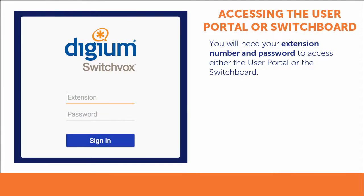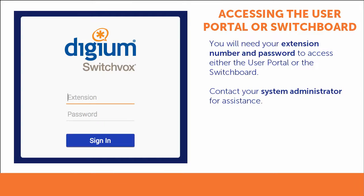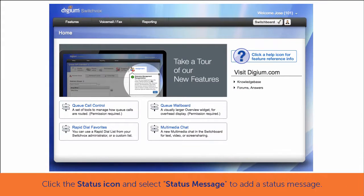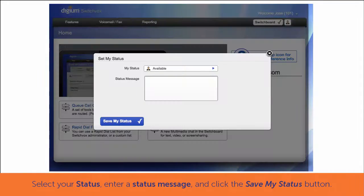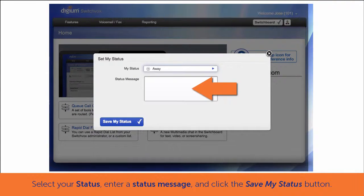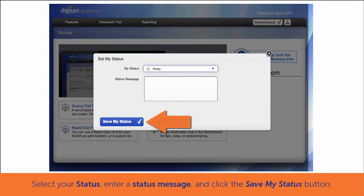To access the user portal or switchboard, you will need your extension number and password. If you do not have this information, contact your system administrator. To set your status in the user portal, click the status icon found next to the switchboard button. Select your status, add a status message if desired, and click Save My Status.